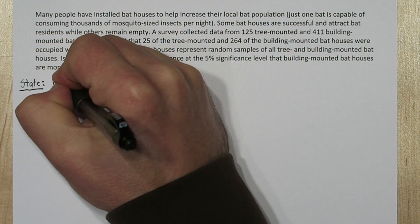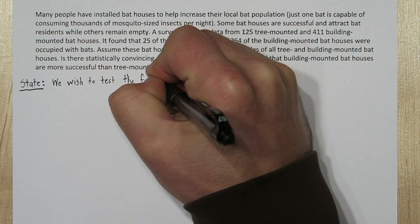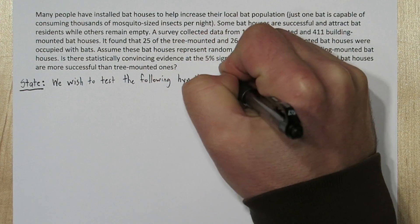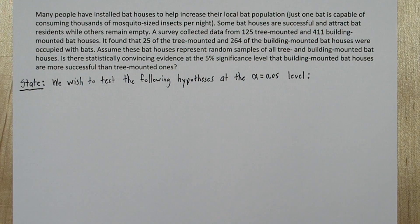We're going to use the four-step solving process here. So in our state step, we wish to test the following hypotheses at the alpha equals 0.05 level.